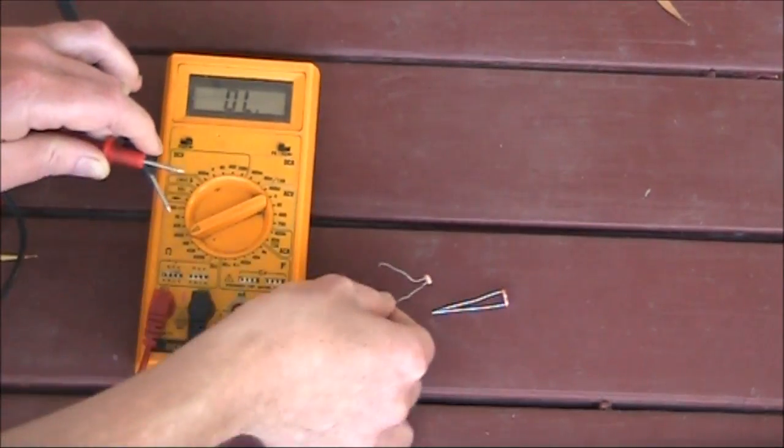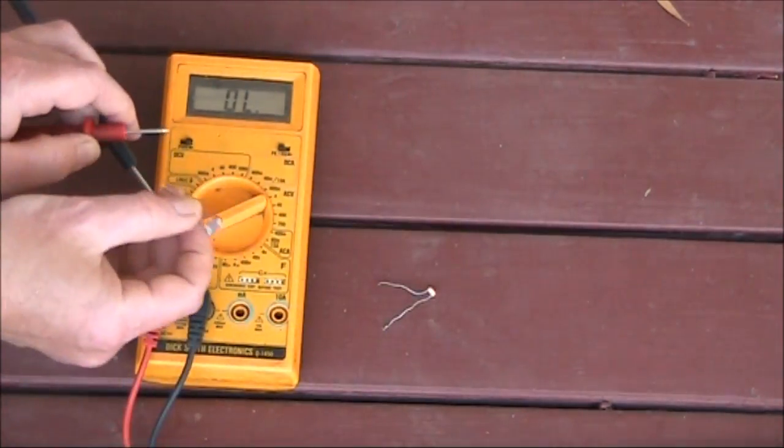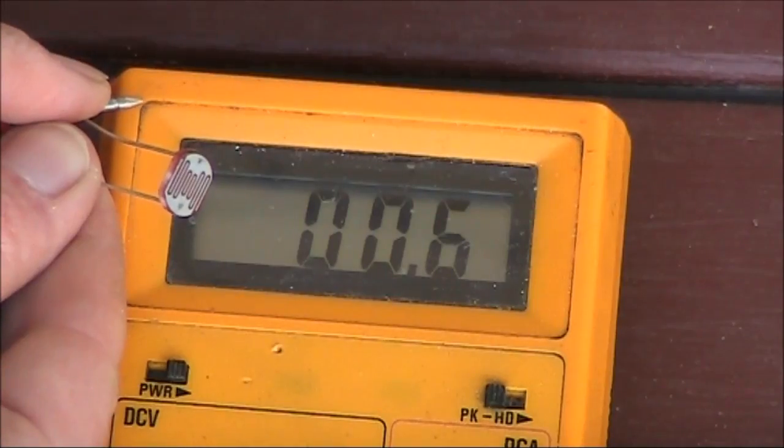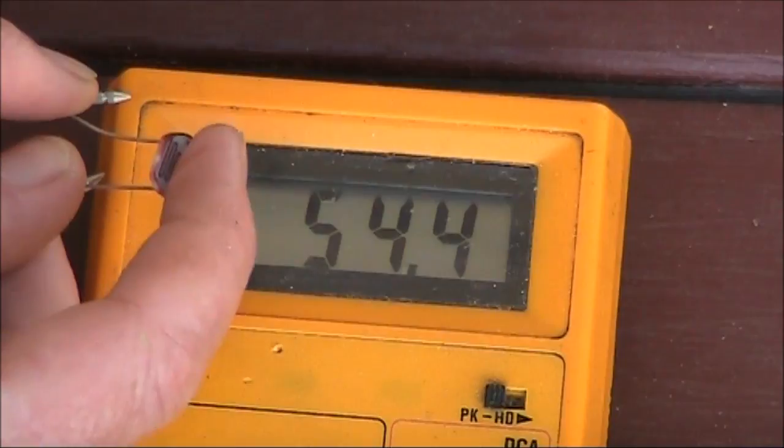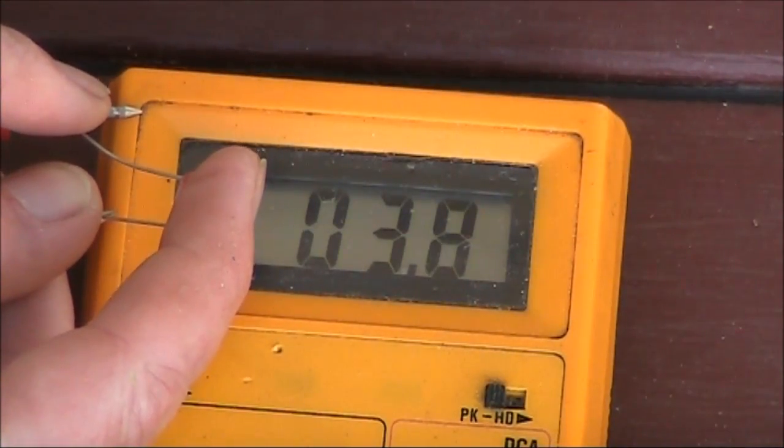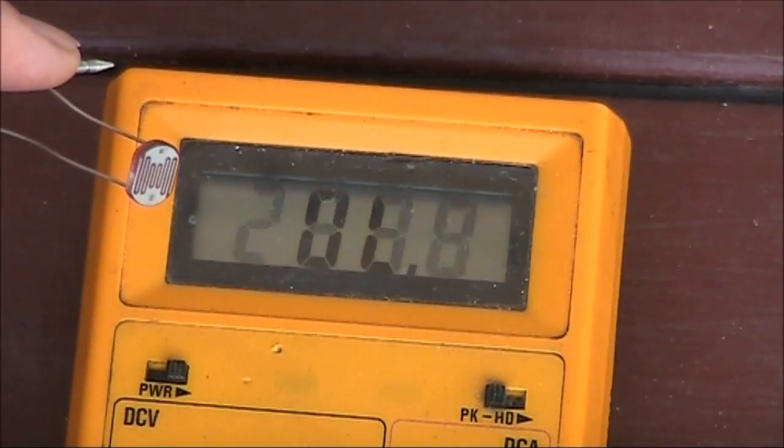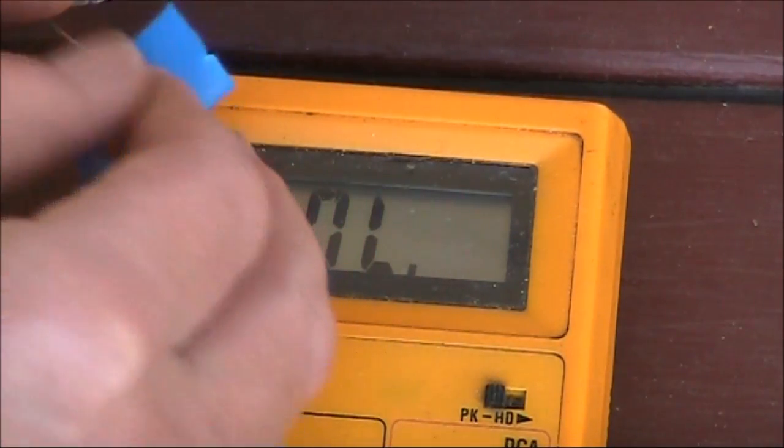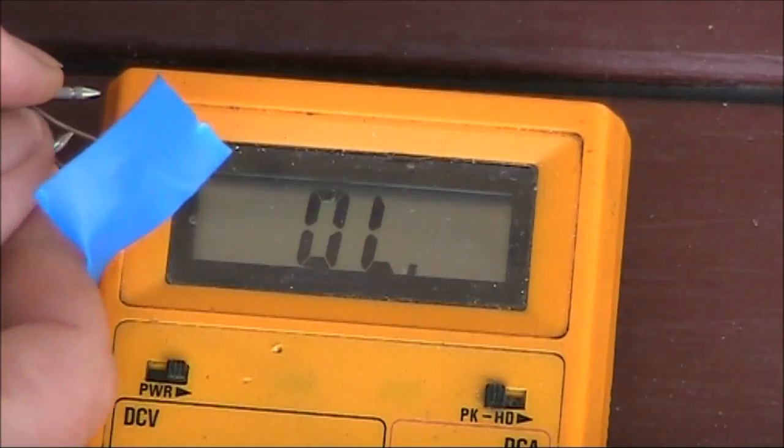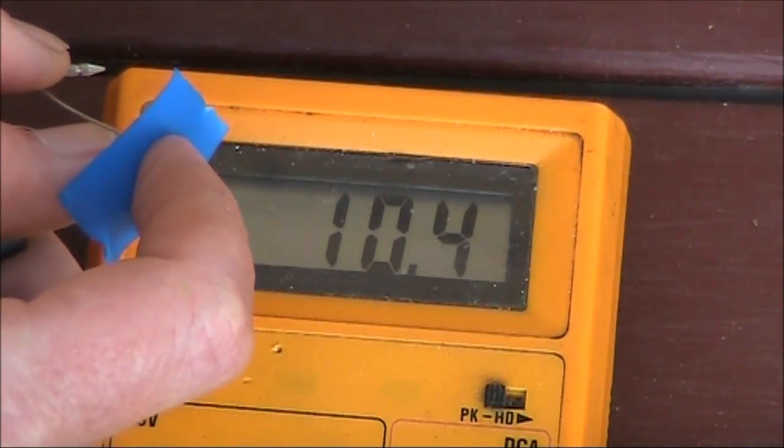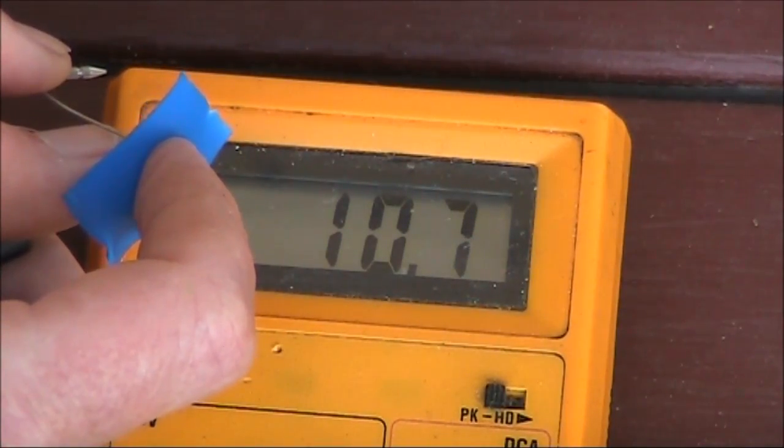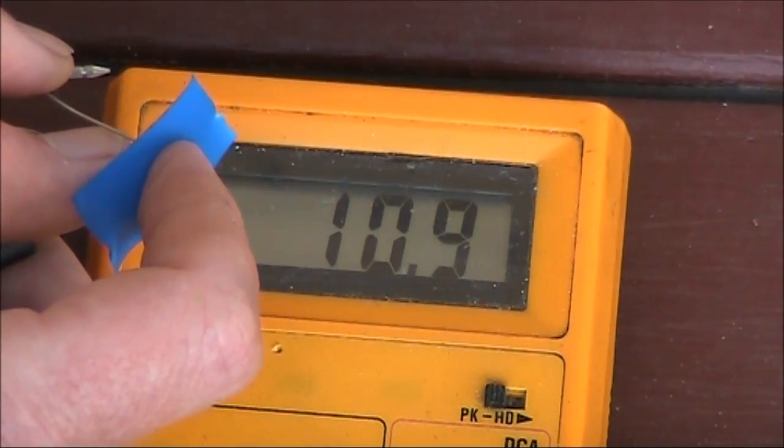Let's try the other LDR, as there are some differences between them. With the big LDR, about 600 ohms in daylight. Covering it up with my finger, about 4K. Then with insulation tape and my finger covering up, around 11K. Though it may well be more in extreme darkness.